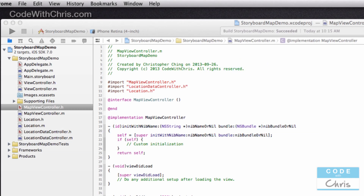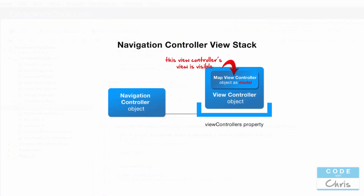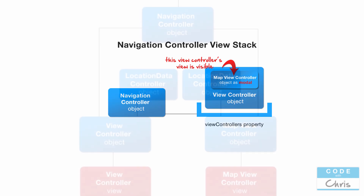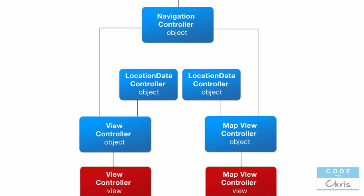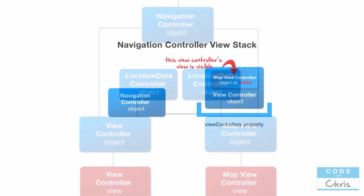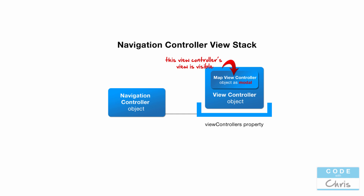A modal transition is another option when creating a connection between view controllers. With a modal transition, the first view controller presents the second view controller as a modal. View controllers have the ability to present other view controllers modally. In the push case, the navigation controller has a reference to both view controllers and controls the transition. In the modal case, the first view controller has a reference to the second and controls whether it's displayed. There's a link in the description to the Apple documentation for more detail.